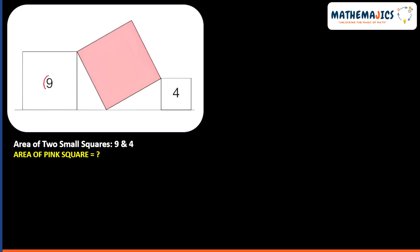In this question we are given two squares whose area is 9 and 4, and we need to find the area of this pink square. If the area of this square is 9, that means the side of the square will be 3 each, because the area is side times side. Three times three gives us 9. Similarly, what will be the side of this square? The side will be 2 each, because 2 times 2 gives us 4.